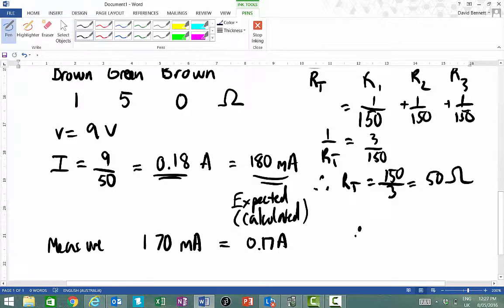Now to work out our percentage error. That's going to be equal to simply 0.18 as my expected, take away 0.17 all over 0.18. And then you times that by 100 to get your percentage error.